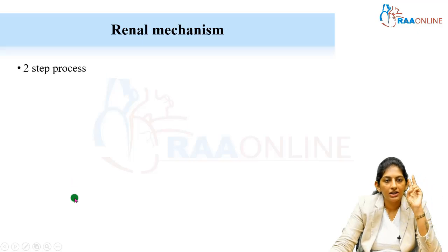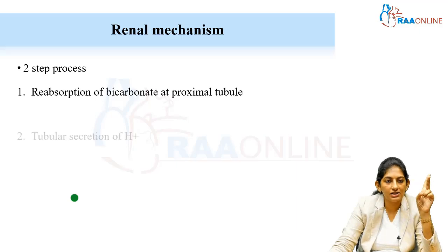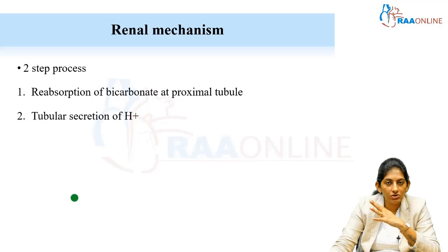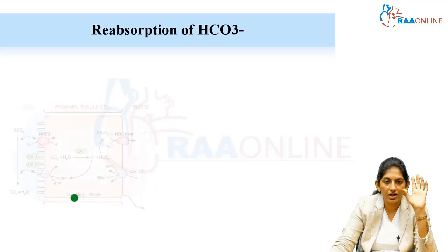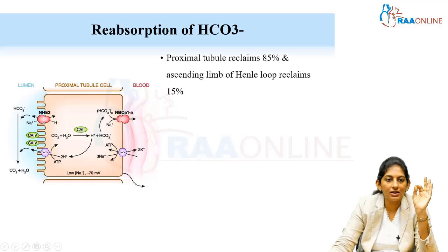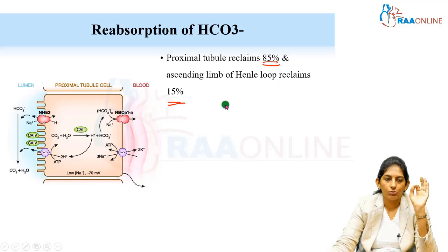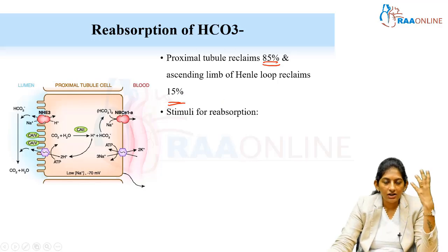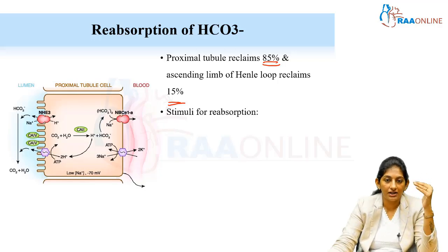The renal mechanism involves a two-step process: reabsorption of bicarbonate and secretion of H+. Most of the bicarbonate is reabsorbed in the proximal tubule — around 85% — while 15% is reabsorbed in the ascending limb of the loop of Henle. Normally, all bicarbonate reabsorption happens at these sites.